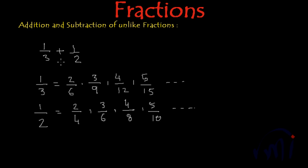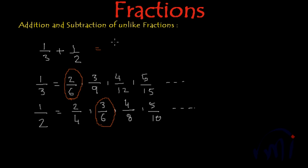To convert 1 by 3 and 1 by 2 into like fractions, we have to write their equivalent fractions in such a way that they have equal denominators. So here we have 6 and here also we have 6. So 2 by 6 and 3 by 6 are like fractions, where 2 by 6 is the equivalent fraction for 1 by 3, and 3 by 6 is the equivalent fraction for 1 by 2.